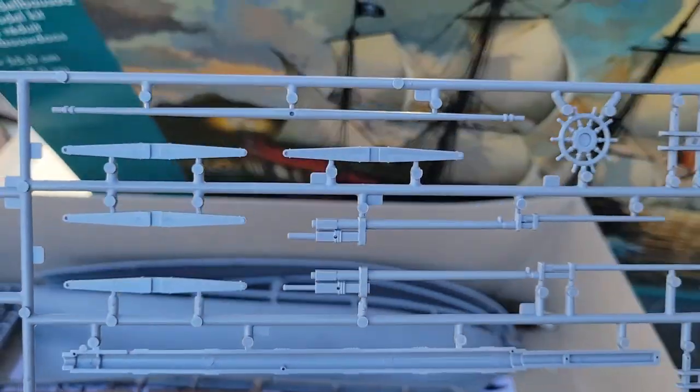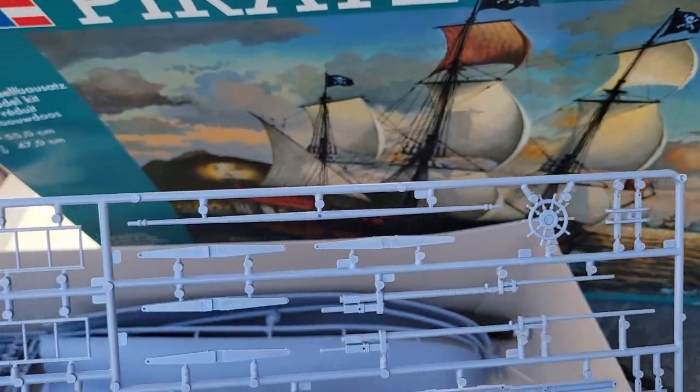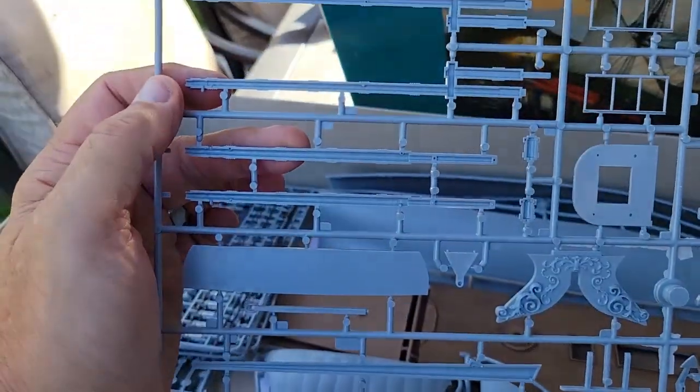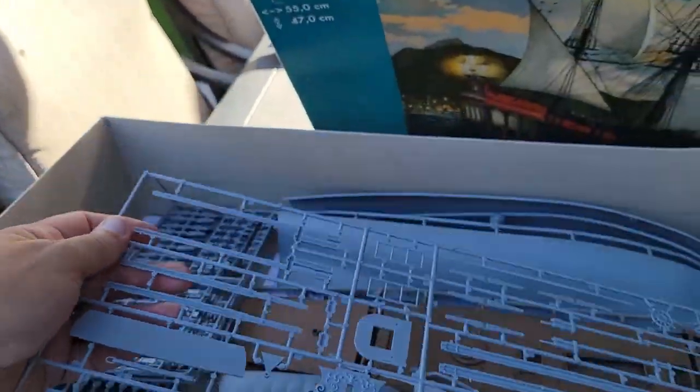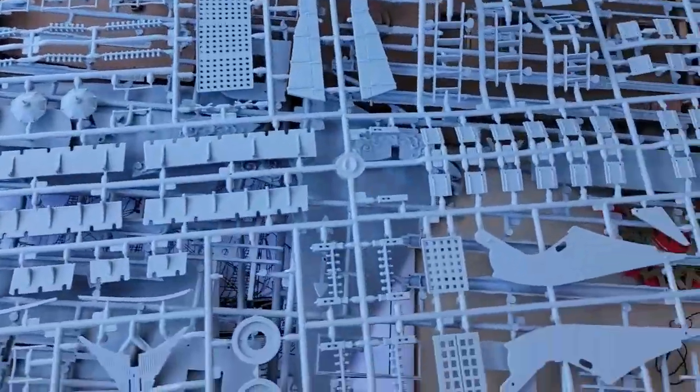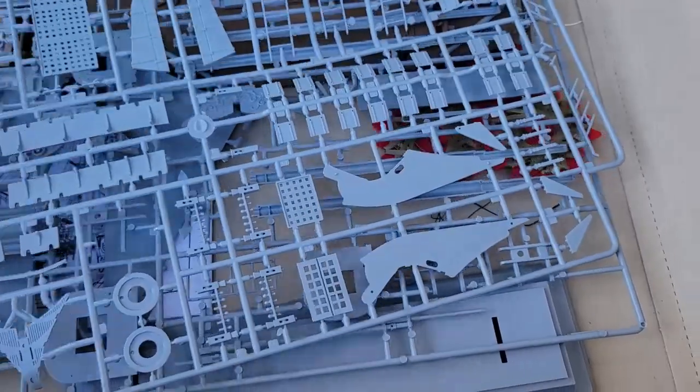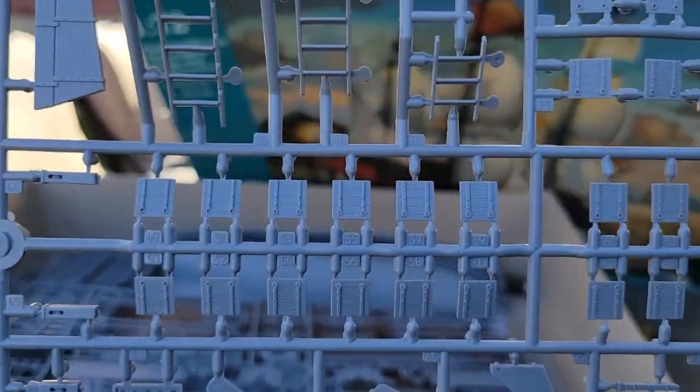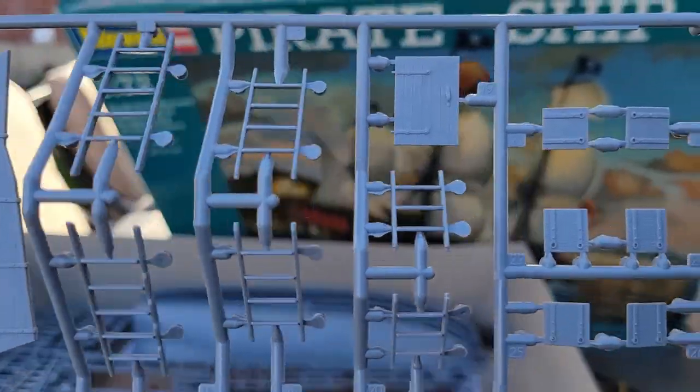Those are gonna look really, really good. Oh, here's part of the stand. Look at that. Oh yeah, that looks nice. There's the ship's wheel. That's a nice big wheel. Looks like we got anchor parts and crow's nest parts and the bowsprit parts.